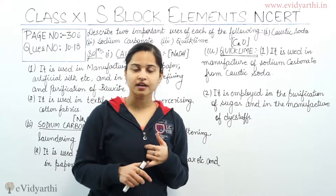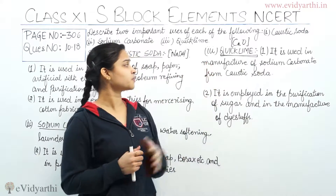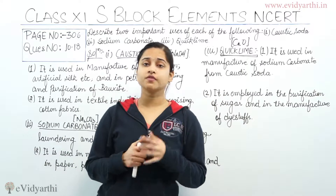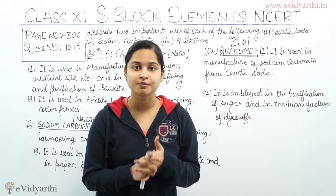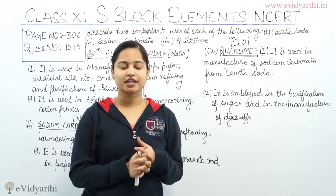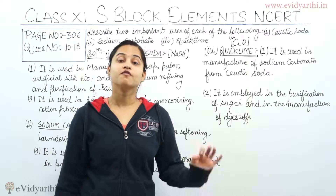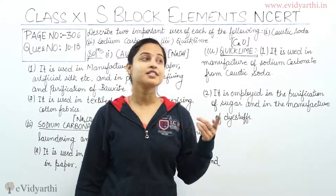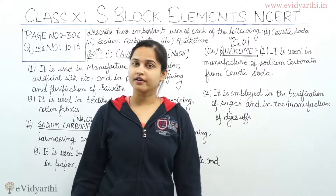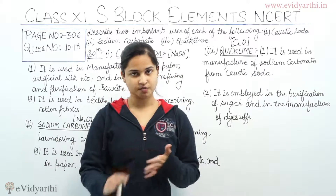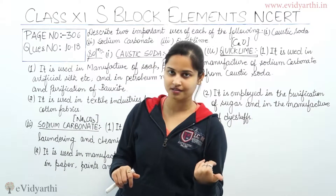Coming to the uses of quicklime, which is calcium oxide (CaO): the first use is that calcium oxide is used in the manufacturing of sodium hydroxide (NaOH). The second use is that calcium oxide is employed for the purification of sugar and in the manufacturing of dyestuffs.